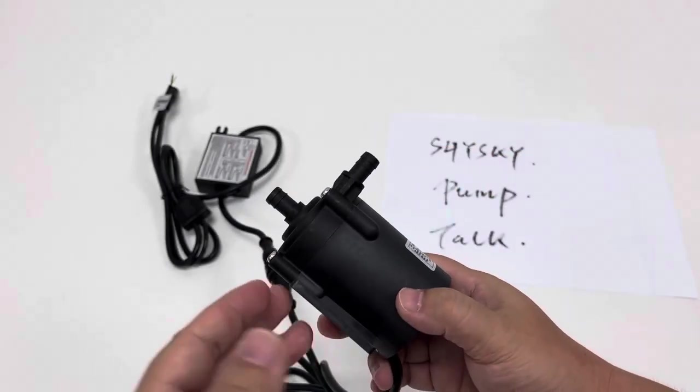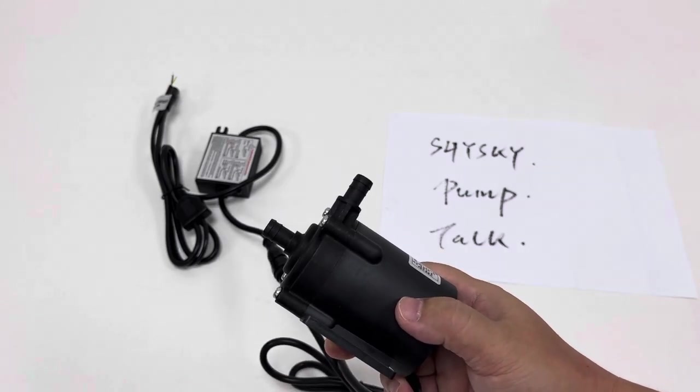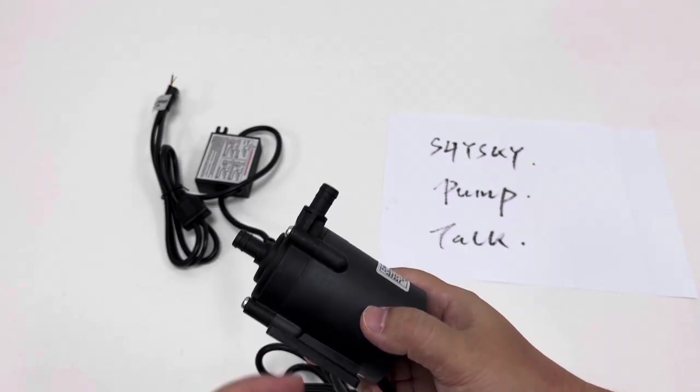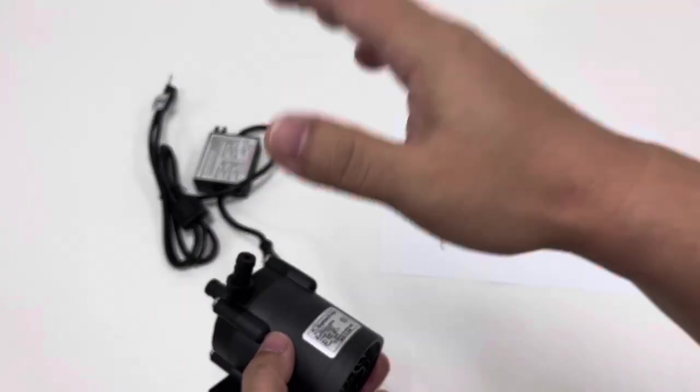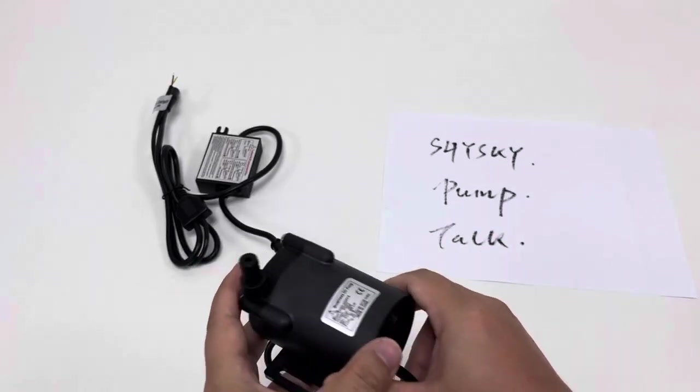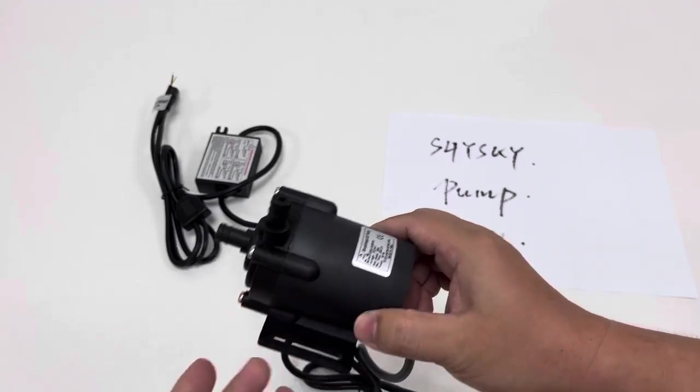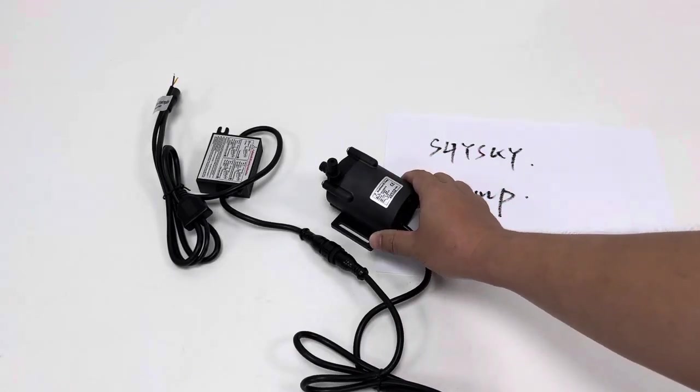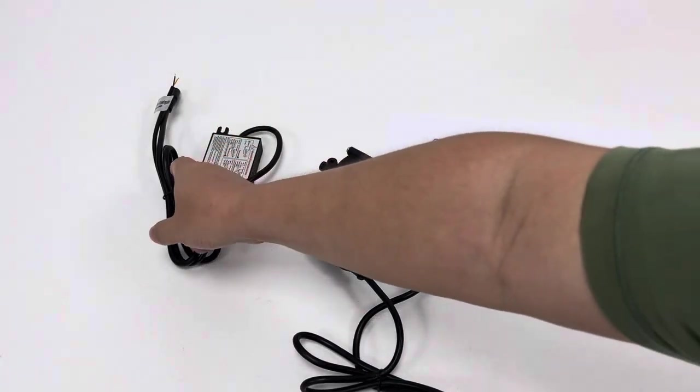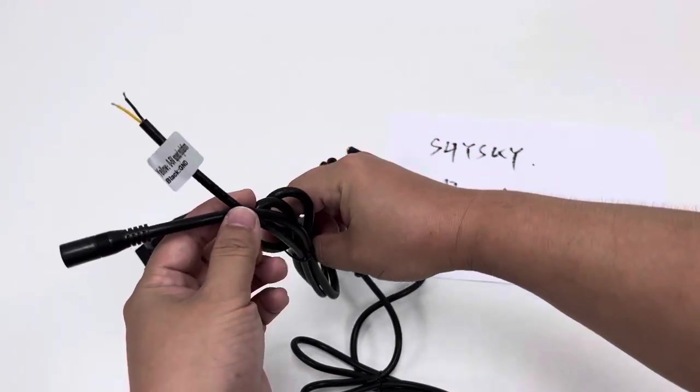So this pump is quite fit for a lot of micro-pressure systems, or circulation systems with quite high lift difference. This is the pump model's parameter introduction. And the main point of this video is about the customization of this 0 to 5 volts power regulation.